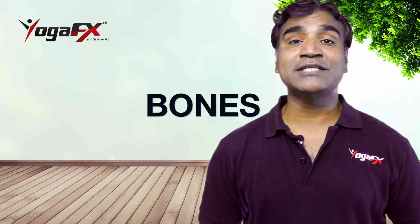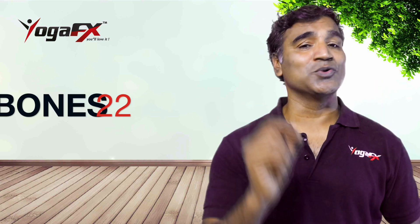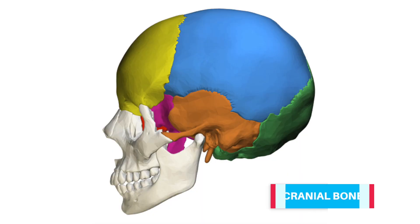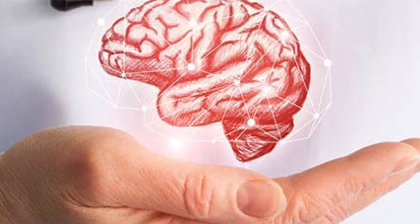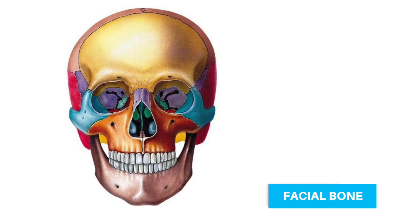The adult skull comprises 22 bones, which can be classified by location. The eight cranial bones form the bulk of the skull and help protect the brain. There are 14 facial bones, found on the front of the skull, which make up the face.